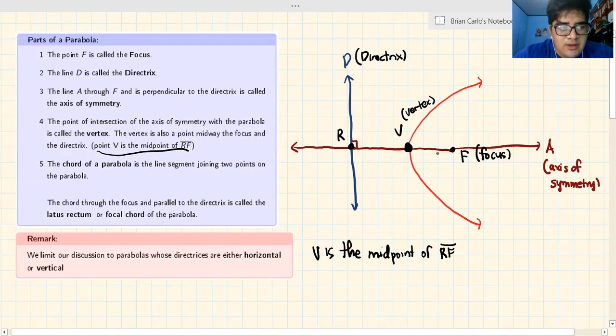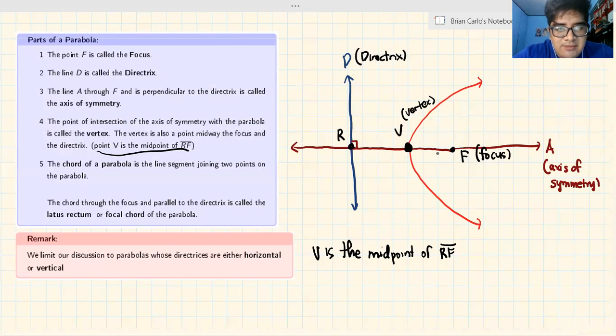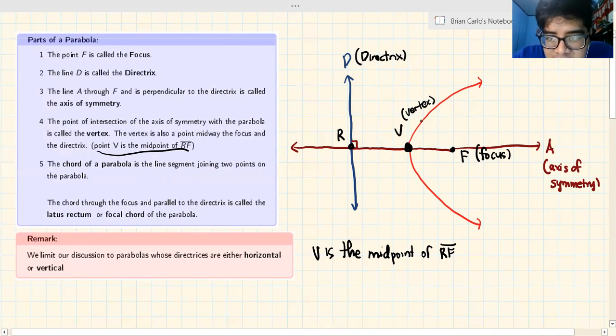Another one. The chord of a parabola is a line segment joining two points on the parabola. For example, if you have two points, the chord is this. You have another point here, this is a chord. You have another point, extend it, that's a chord. But we'll delete that because it's not important. Now we know what a chord is.